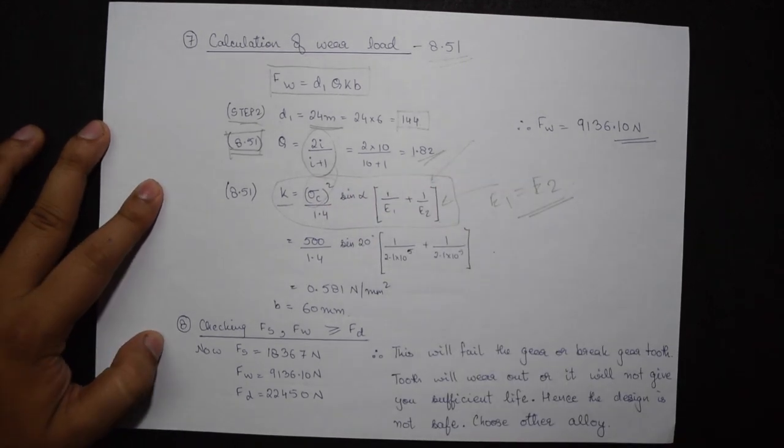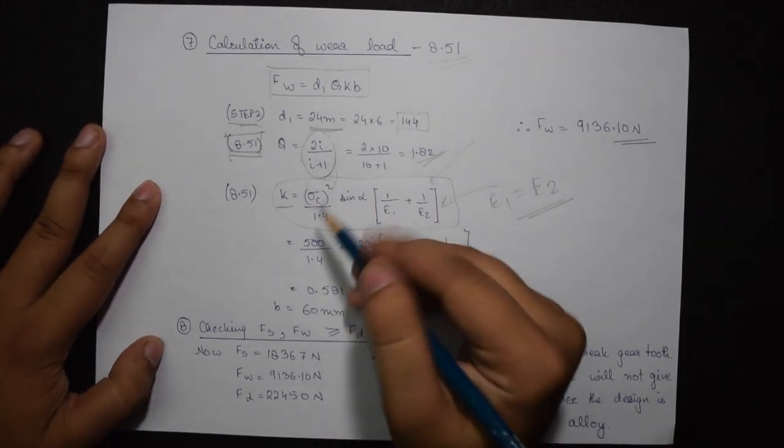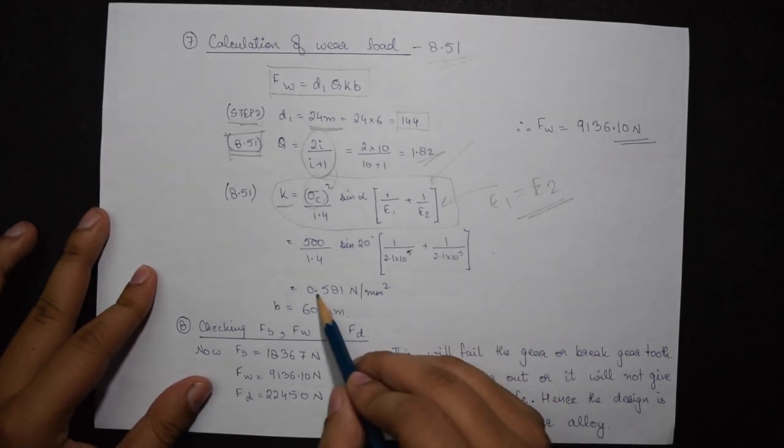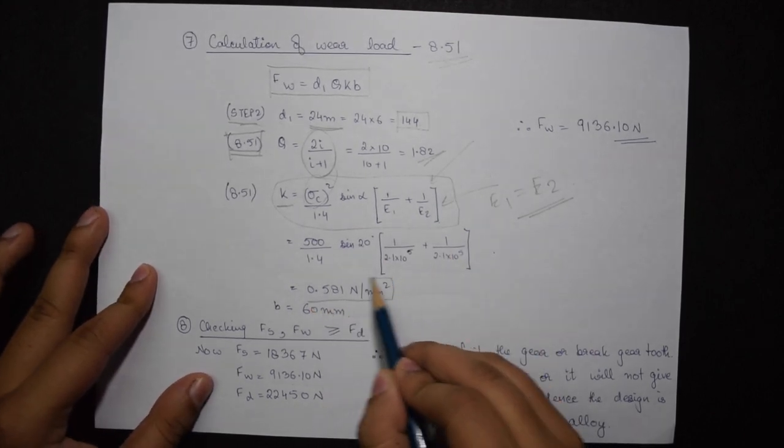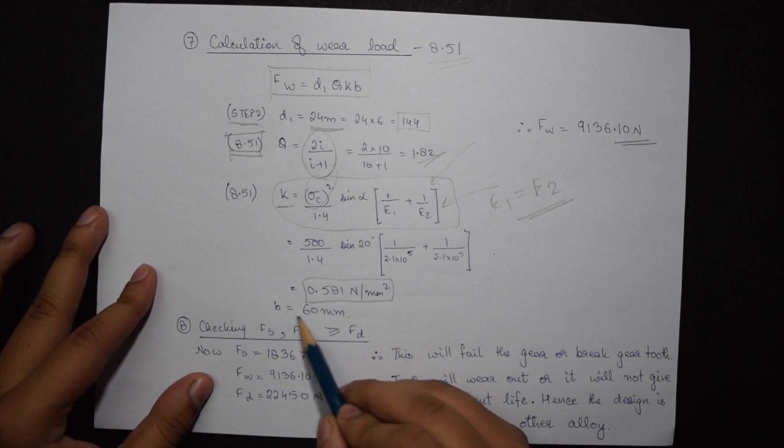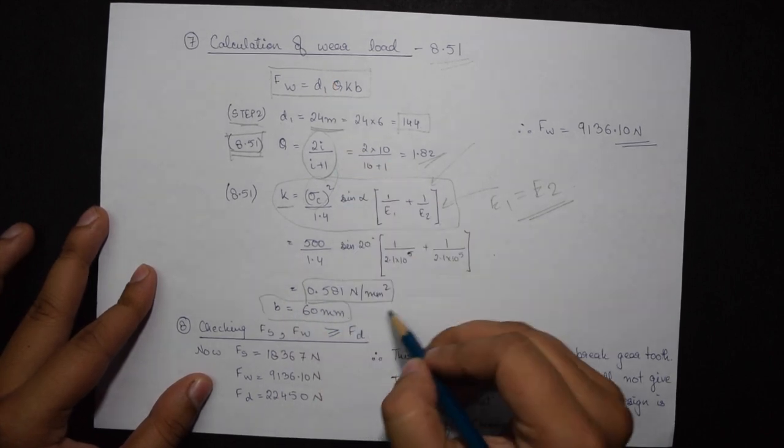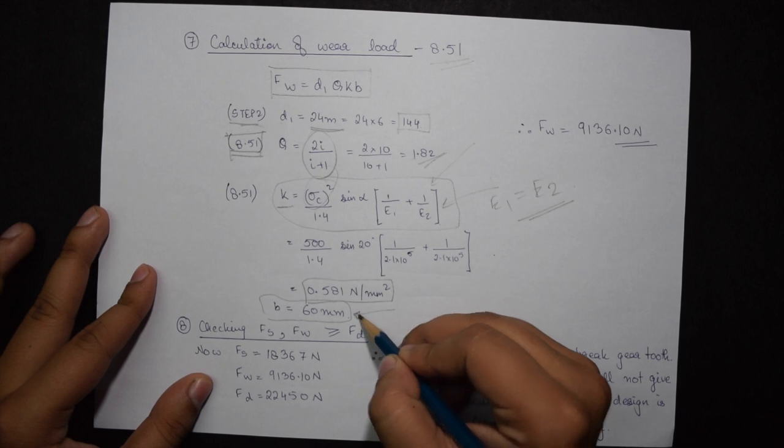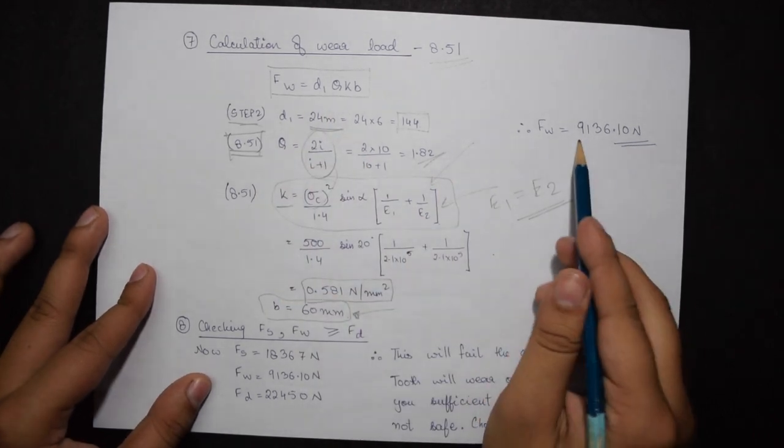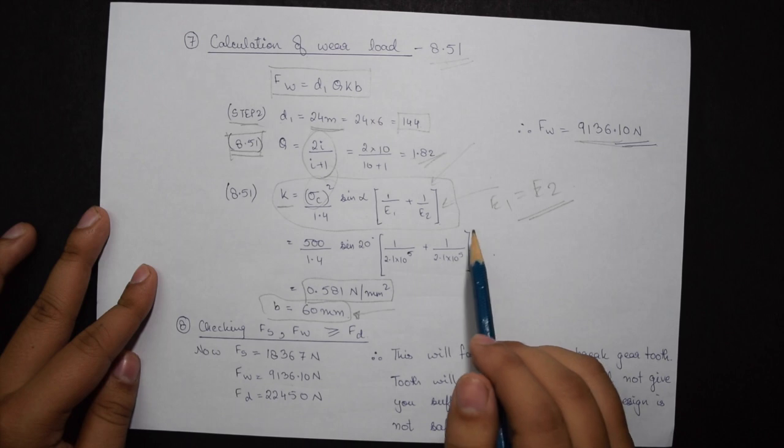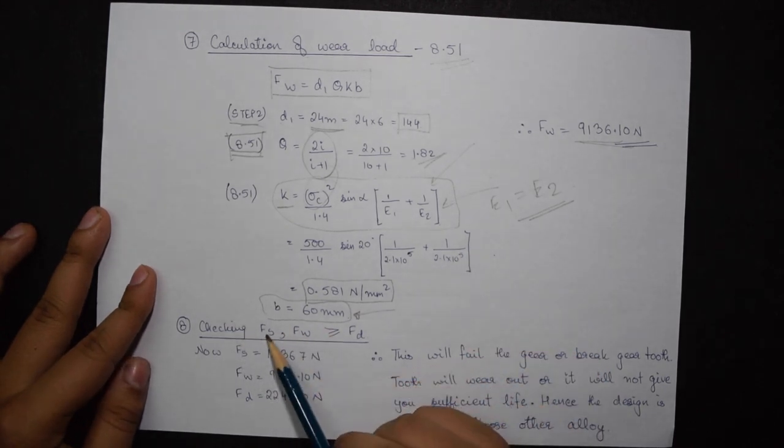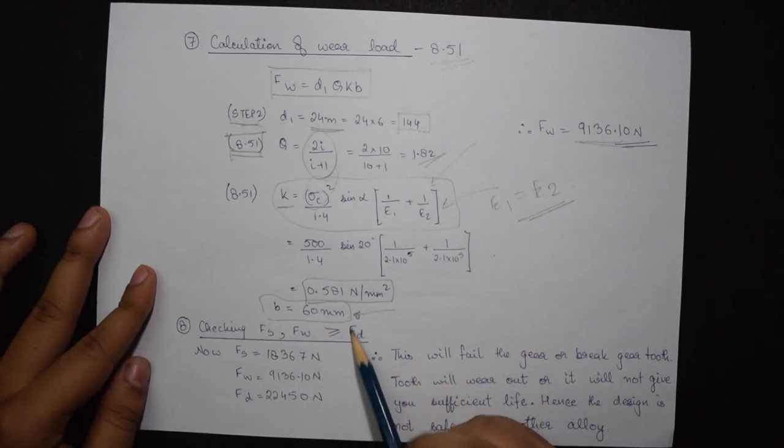So this value becomes 0.581 newton per mm square. Lastly B is 60 mm. Here I'll be substituting it in mm because I do not have any constraints, so FW becomes 9136.1 newtons. The last step was checking whether FS and FW is greater than FD.